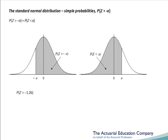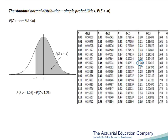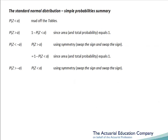Let's apply this to an example. Suppose we want the probability that z is greater than minus 1.26. Using symmetry this is equal to the probability that z is less than 1.26. Less than positive probabilities are tabulated, so looking in the tables we see that the probability that z is less than 1.26 is 0.89617. We've now covered the four basic probabilities: less than a positive, which we read off the table; greater than a positive, using 1 minus less than a positive; less than a negative, using symmetry to swap it to more than a positive and then 1 minus less than a positive.